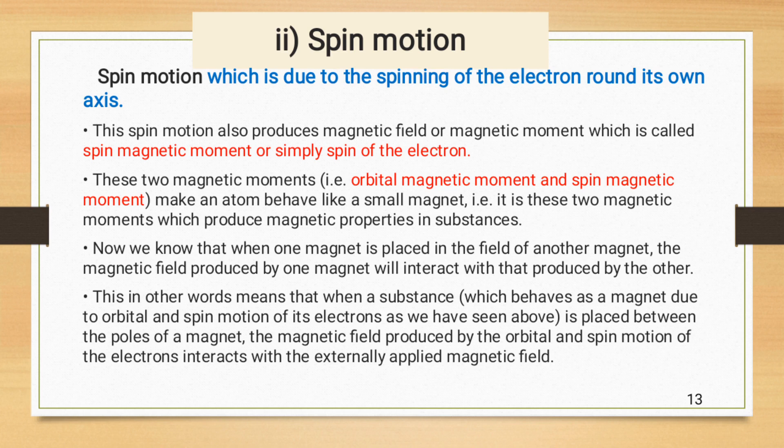Now we know that when one magnet is placed in the field of another magnet, the magnetic field produced by one magnet will interact with that produced by the other. It may be interacted in a constructive way or destructive way. If this interference is constructive then it increases the magnetic properties of that substance but if it is destructive then it decreases the magnetic properties of that substance.